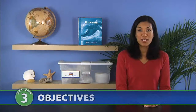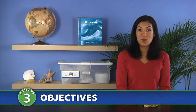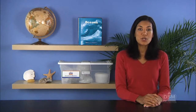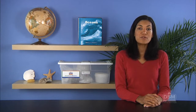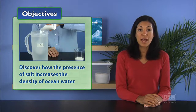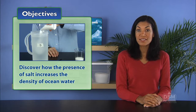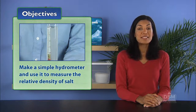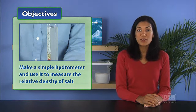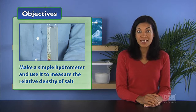In Activity 3, Properties of Ocean Water, students determine the salinity of ocean water. They first discover how the presence of salt increases the density of ocean water, and then make a simple hydrometer to measure the relative density of salt water samples.